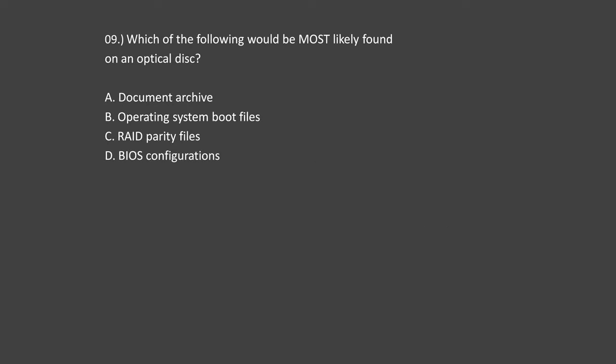Question 9. Which of the following would be most likely found on an optical disk? Option A: Document Archive. Option B: Operating System Boot Files. Option C: RAID Parity Files. Option D: BIOS Configurations.